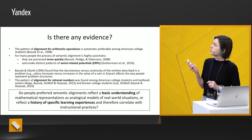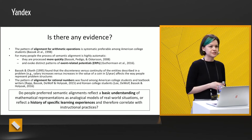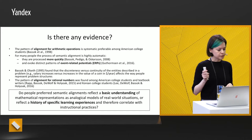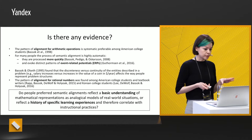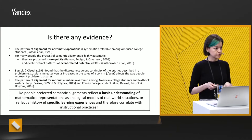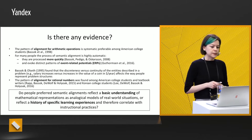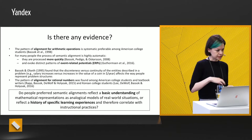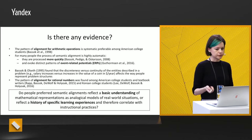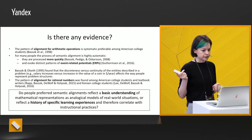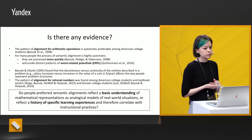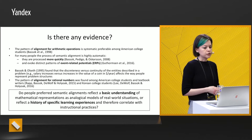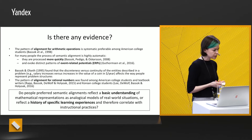In several studies, there were findings that provide evidence for this pattern. For example, on a sample of US students, it was shown that the pattern of alignment for arithmetic operations is systematically preferable among college students. Moreover, for many people the process of semantic alignment is highly automatic, meaning these operations are processed more quickly. For semantic alignment with rational numbers, the pattern is also systematically preferred among American college students, textbook writers, and even Korean college students.